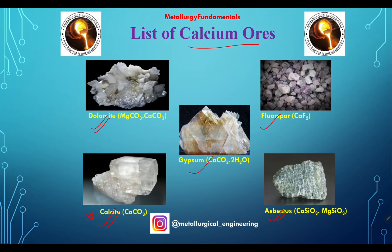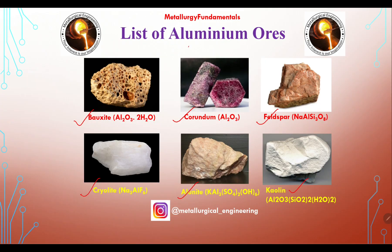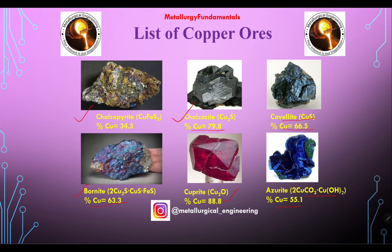For calcium ores, dolomite and calcite are important. For magnesium ores, magnesite and dolomite are both important. For aluminium ores, the most common is bauxite, followed by corundum and feldspar — all three are important. For copper ores, chalcopyrite, chalcosite, and cuprite are the most important.